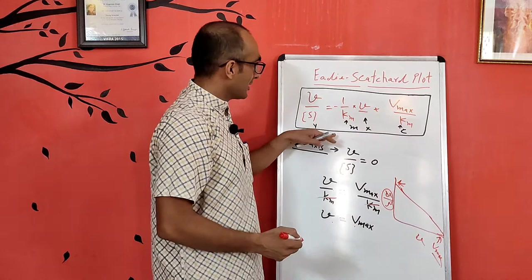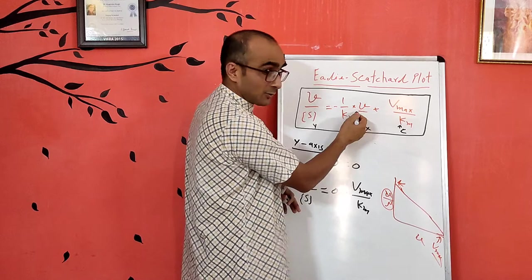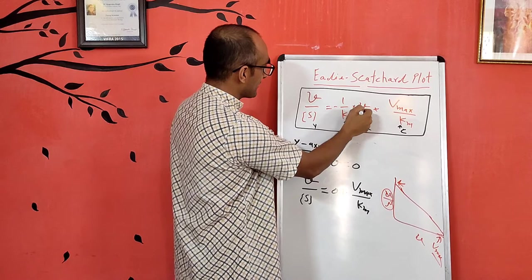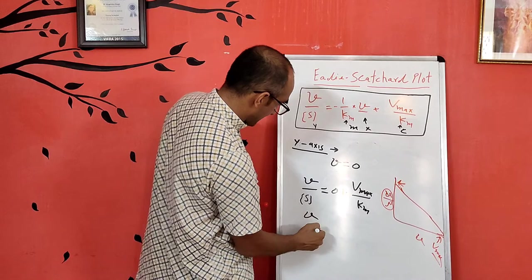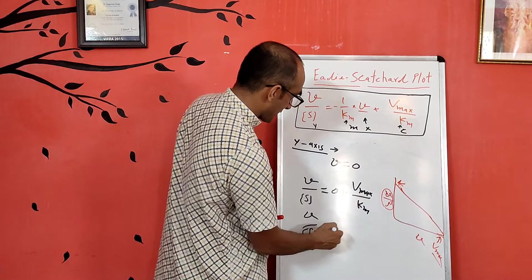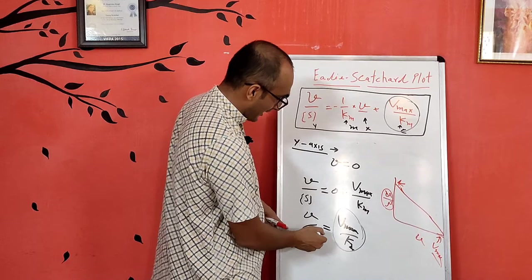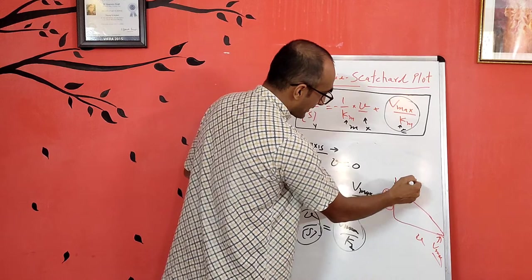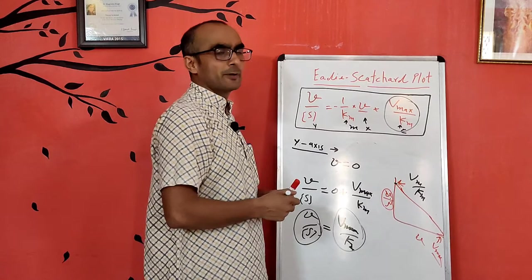Similarly, to calculate the y-axis intercept, the value of v on the y-axis intercept is 0. Substituting v = 0 into the equation: v/S = 0 + Vmax/Km. Therefore, v/S — which is plotted on the y-axis — equals Vmax/Km at the intercept. So from this graph you can calculate very precise, accurate values of Km and Vmax, in comparison to the Michaelis-Menten equation alone.